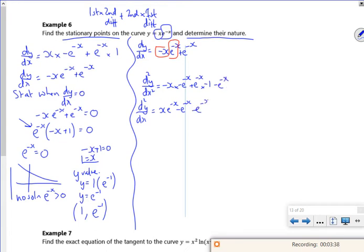Which is a minus e to the minus x. So the second differential is x e to the minus x minus 2 e to the minus x.